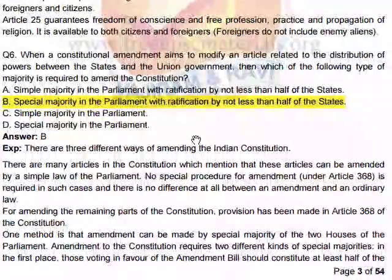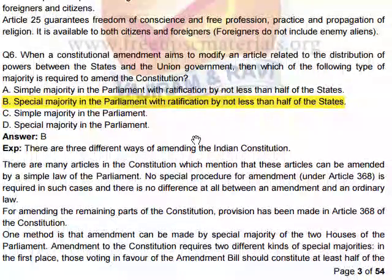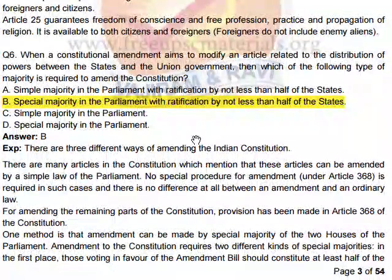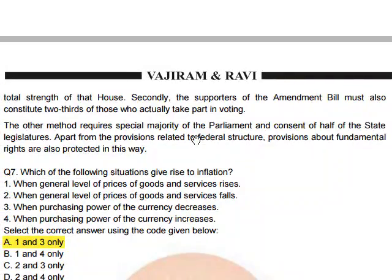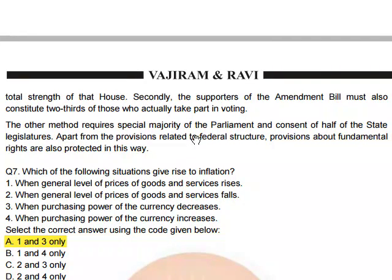Amendment to the constitution requires two kinds of special majorities: first, those voting in favor must constitute at least half of the total strength of the House; second, supporters of the amendment bill must also constitute two-thirds of those actually voting. A third method requires special majority of Parliament plus consent of at least half of the state legislatures, applicable to federal structure provisions.